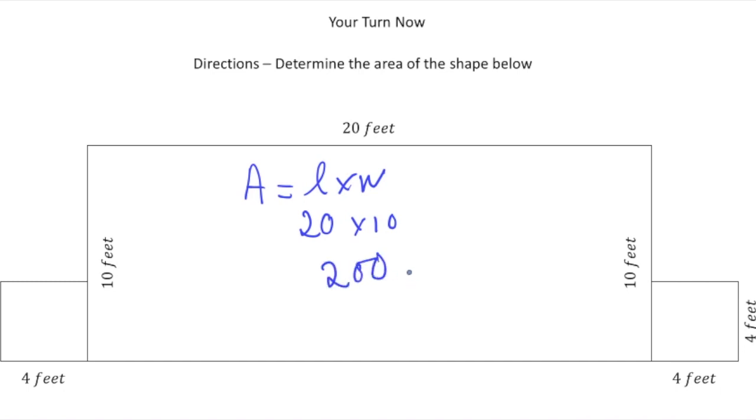So the area of the big rectangle is 200 square feet. But now we also have the two squares. So I know the length and width is actually the same because it's a square. So 4 times 4 is 16. So this is going to be 16 square feet, which is going to be the same as over here, which is also 16 square feet, because it's the same image.